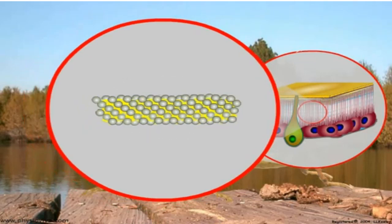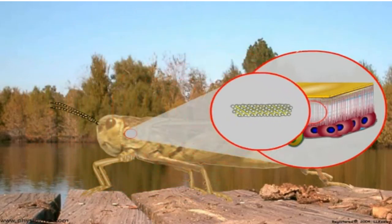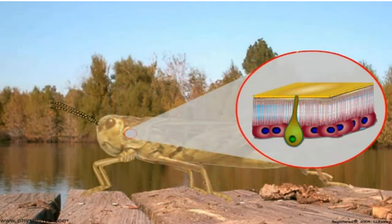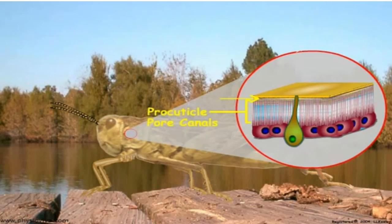The chitin protein chains are deposited in the endocuticle as layers throughout the intermolt period. Pore canals are minute tubular channels that extend from the epidermal cells through the procuticle and end below the epicuticle. The pore canals may be formed by cytoplasmic extensions of the epidermal cells as the procuticle is formed following a molt.